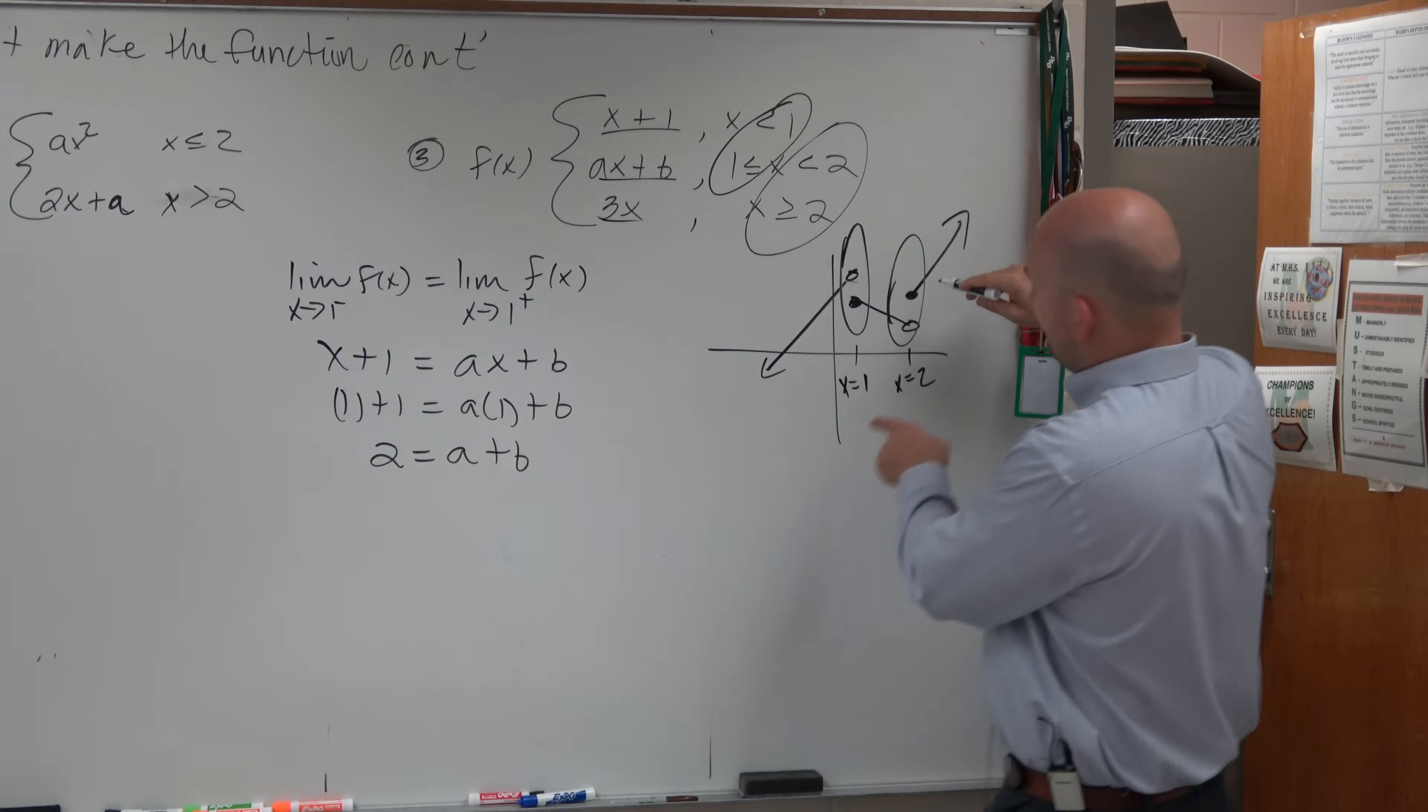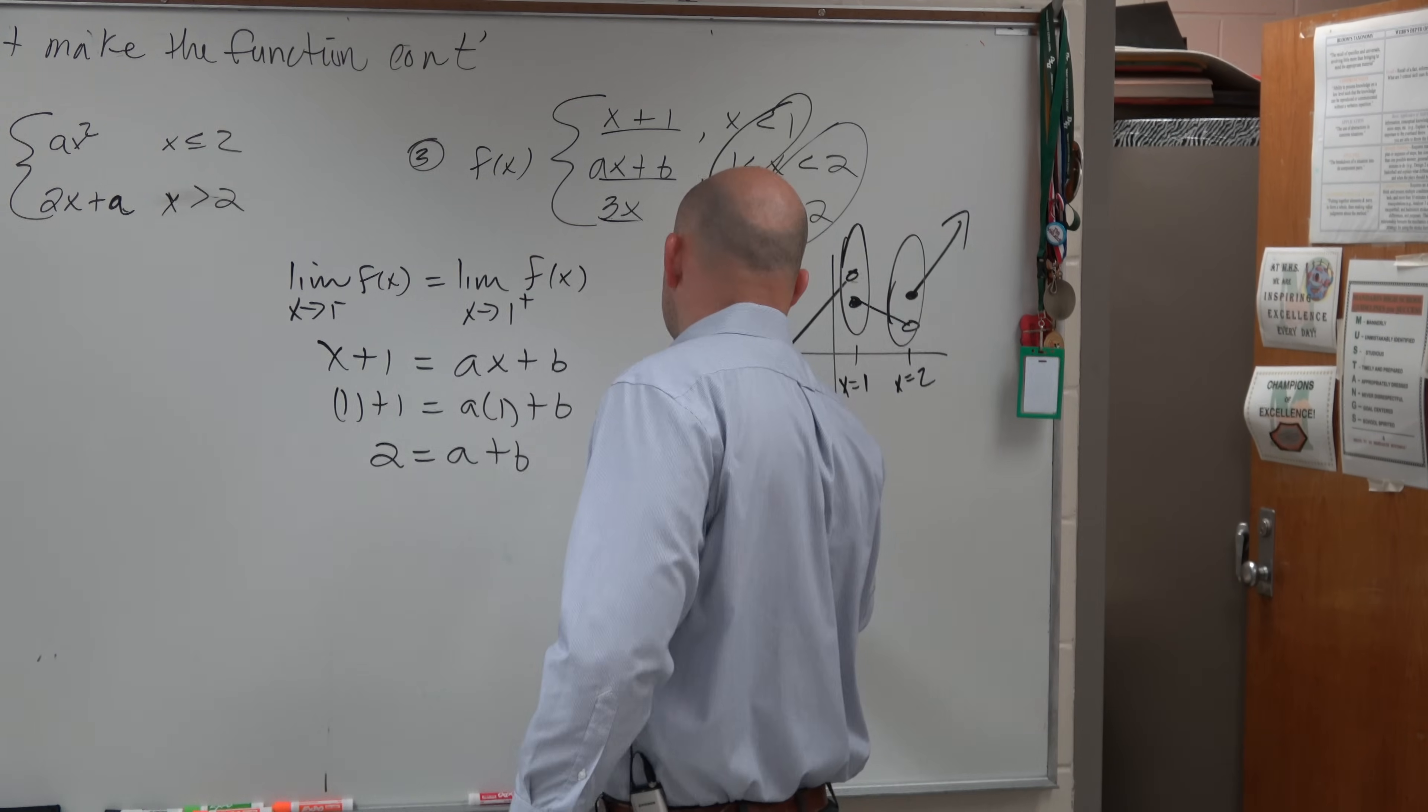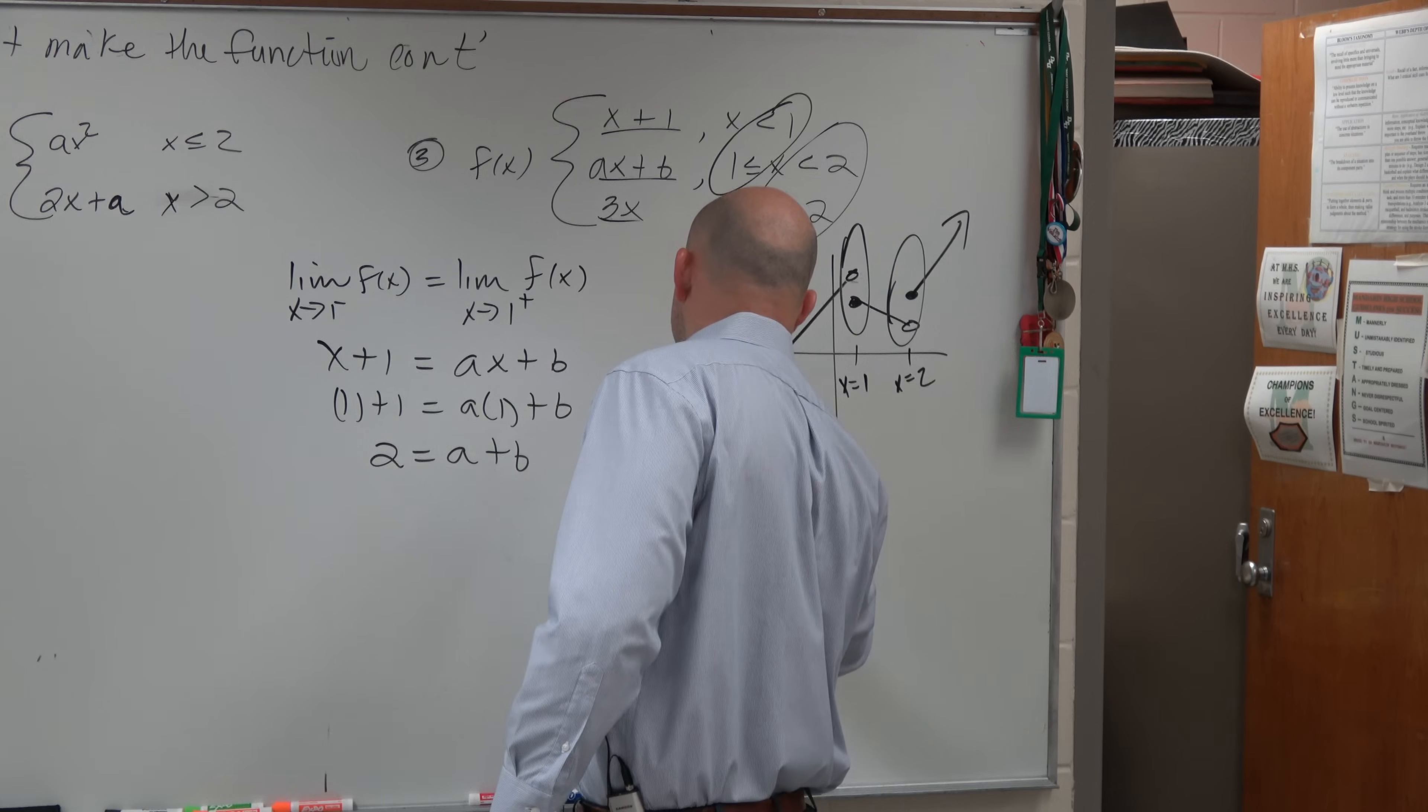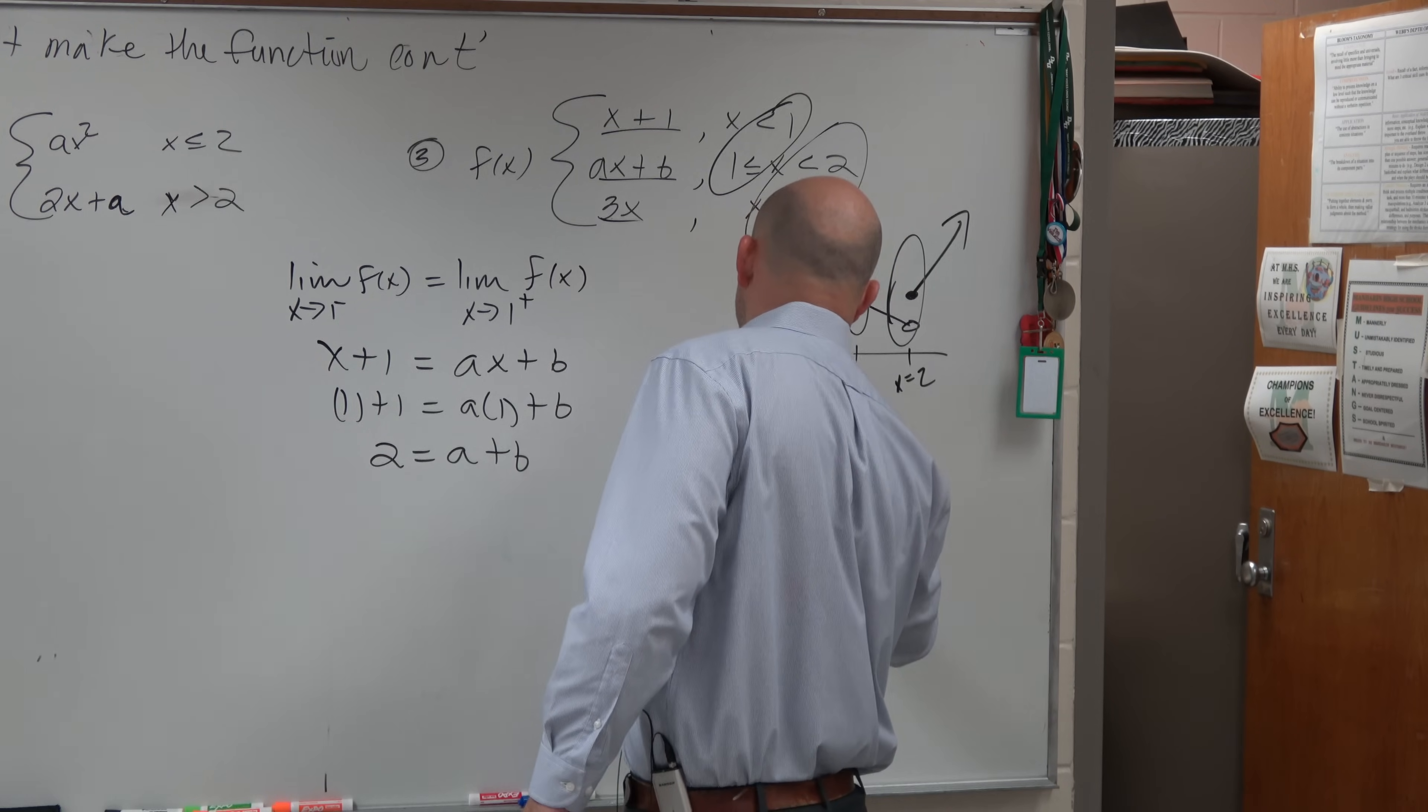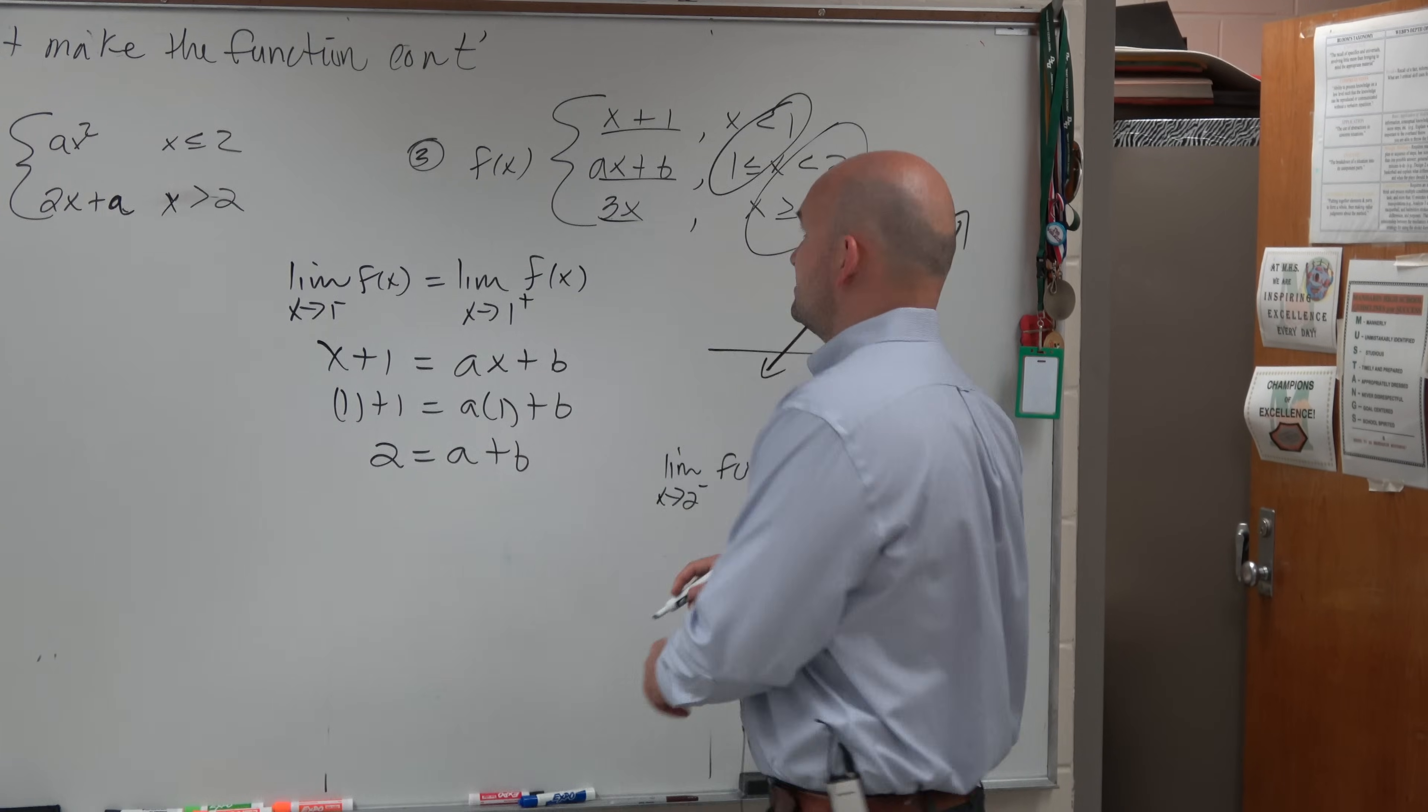For the next thing, we want to make sure the left and right-hand limit at 2 is going to be the same. So again, I'll just write the limit as x approaches 2 from the left of f of x equals the limit as x approaches 2 from the right of f of x.